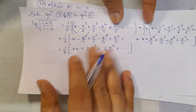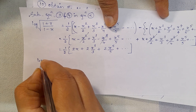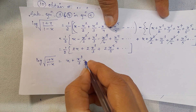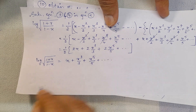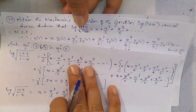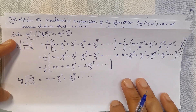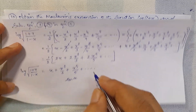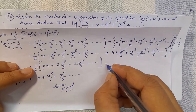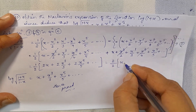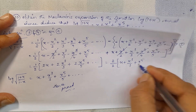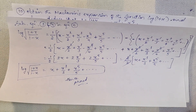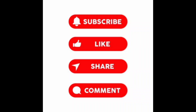Taking 2 outside and cancelling 2/2: log√((1+x)/(1-x)) = x + x³/3 + x⁵/5 + etc. Hence, log of the square root of (1+x)/(1-x) equals x plus x cubed by 3 plus x to the fifth by 5, plus etc. Hence proved. Thank you so much.